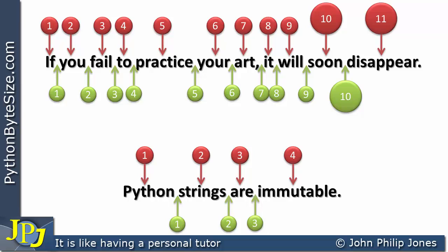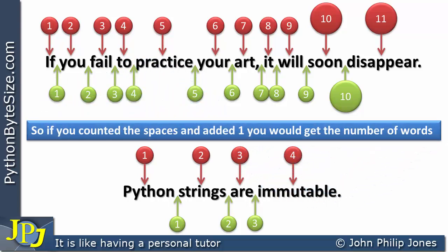If we look at the first string, 'If you fail to practice your art it will soon disappear,' there are eleven words and ten spaces. So we can see the number of words is one bigger than the number of spaces. For 'Python strings are immutable' there are four words and three spaces. Again the number of words is one bigger than the number of spaces. So if you counted the spaces and added one you would get the number of words.